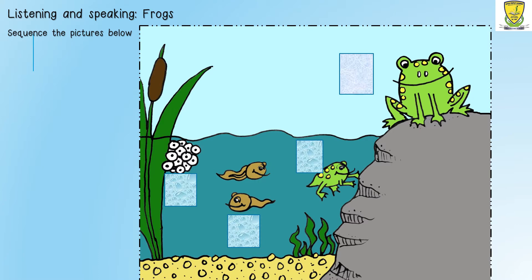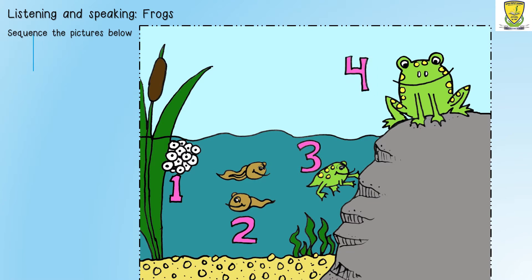If you look at this picture on the screen, let us look for stage one. Stage one is the egg stage. Well done. What is stage two? Stage two is the tadpole stage. Good job. Stage three is the froglet stage. Good job, it's the froglet stage. And then the last stage is the adult frog stage. I hope you all have enjoyed this lesson about frogs.